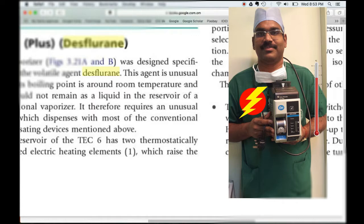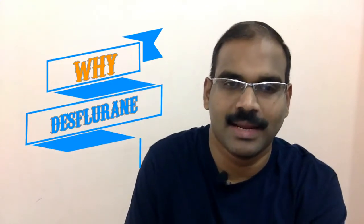Other contemporary volatile agents like halothane, isoflurane, and sevoflurane, with boiling points around 50 degrees Celsius, are vaporized using conventional flow-over vaporizers without supplying thermal energy. Hi, I'm Sanish, welcoming you to another edition of Tools in Anesthesia and Critical Care.